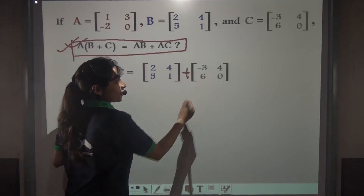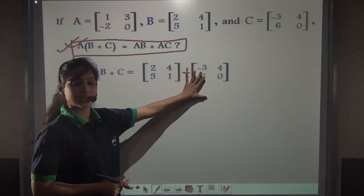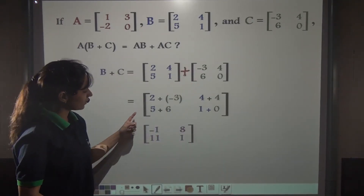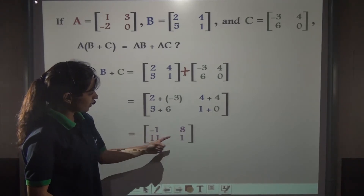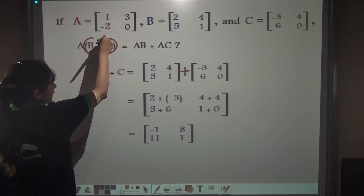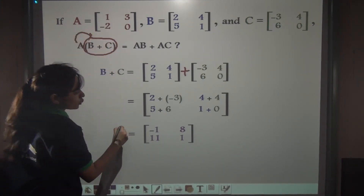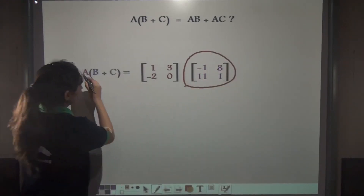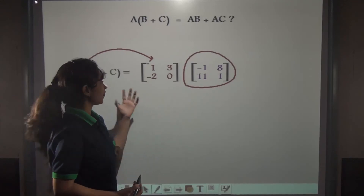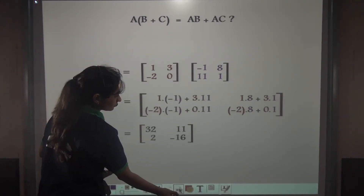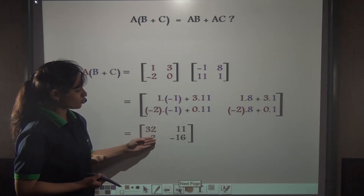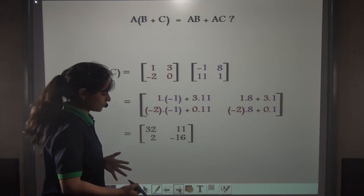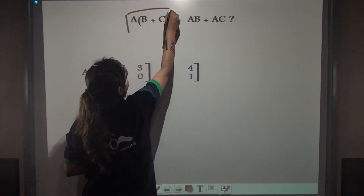Find matrix B plus matrix C. Addition is easy since both are the same order — add them up. B plus C gives us minus 1, 8, 11 and 1. Now we have to multiply matrix A by this resultant matrix B plus C. We have written the B plus C matrix and multiply matrix A with it. We get 32, 11, 2, minus 16. We are done with the LHS part.